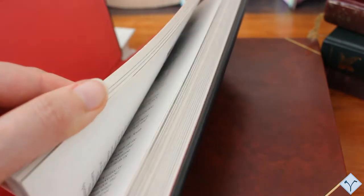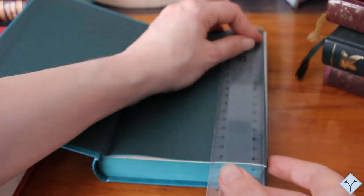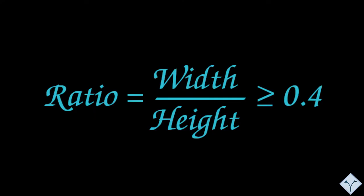By thick, I mean the ratio of the book's width to its height. The rule of thumb is that the thickness should be around or more than 0.4. If you do not want to calculate the ratio, simply use your imagination and depict the subject on the fore-edge of your book.